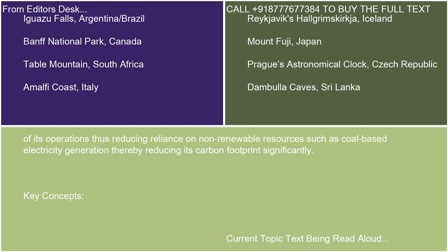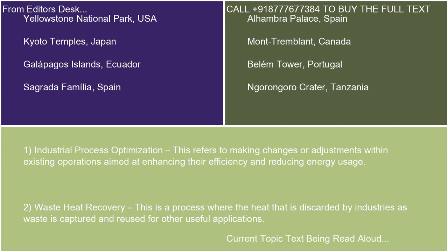Key Concepts: 1. Industrial Process Optimization refers to making changes or adjustments within existing operations aimed at enhancing their efficiency and reducing energy usage. 2. Waste Heat Recovery is a process where the heat that is discarded by industries as waste is captured and reused for other useful applications.